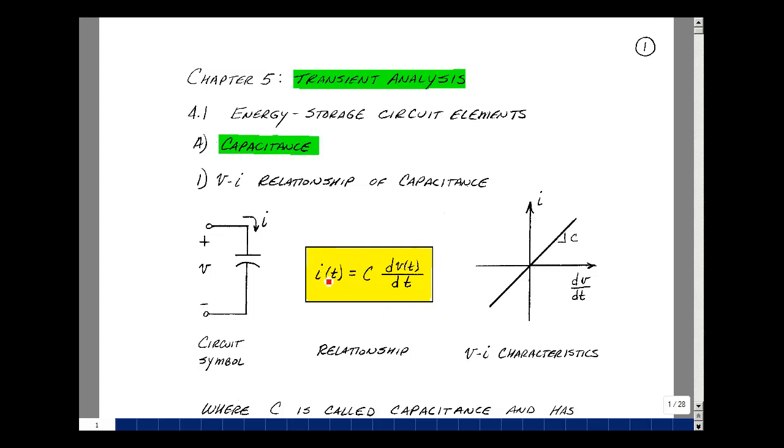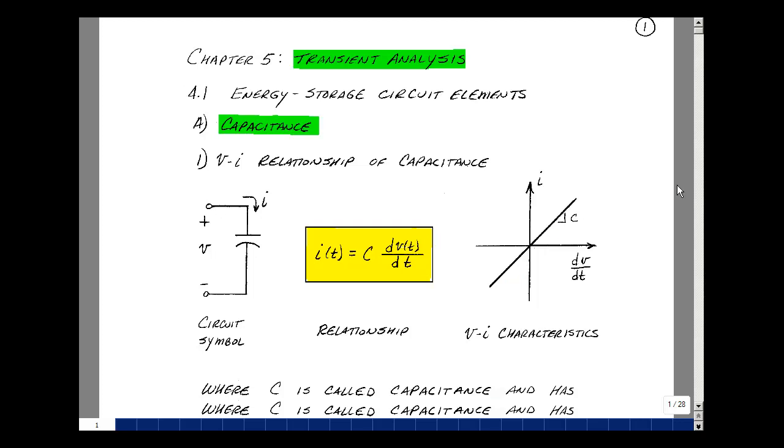Now, we've sketched voltage-current plots in the past. Let's do this again. I'll put current on the y-axis, but now on the x-axis, if I put the derivative of voltage with respect to time, I'll get a straight line that passes through the origin with a slope of c.